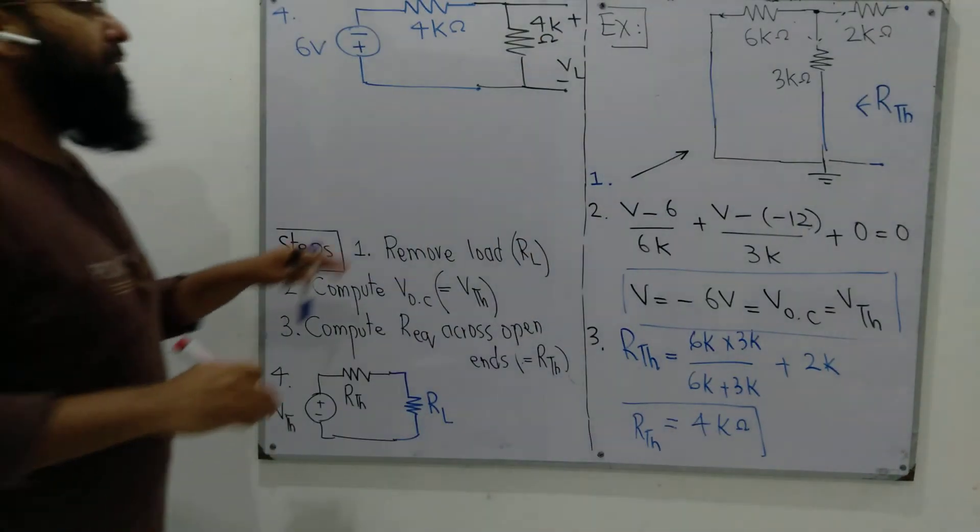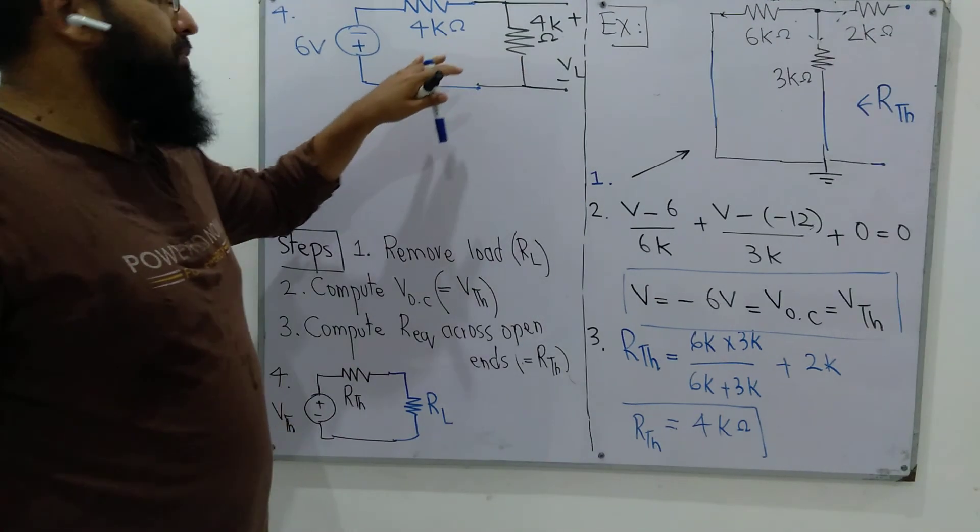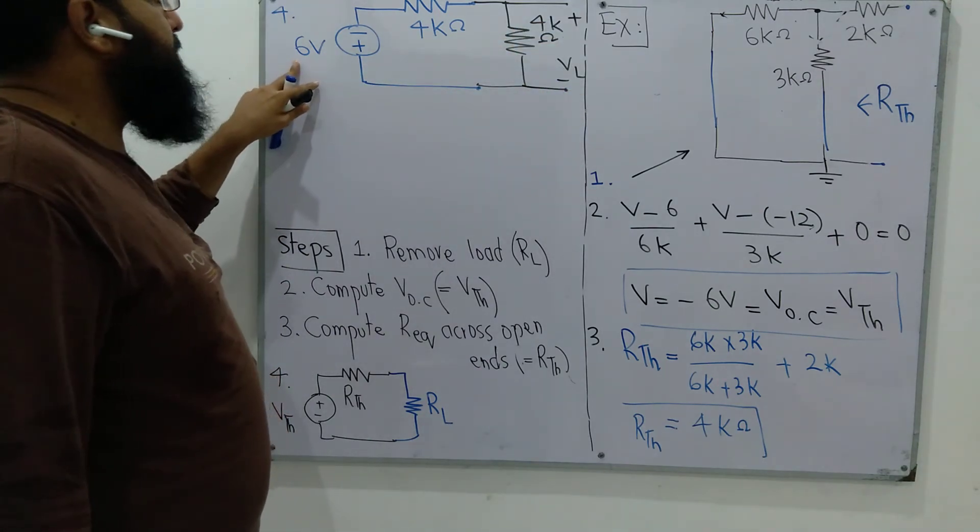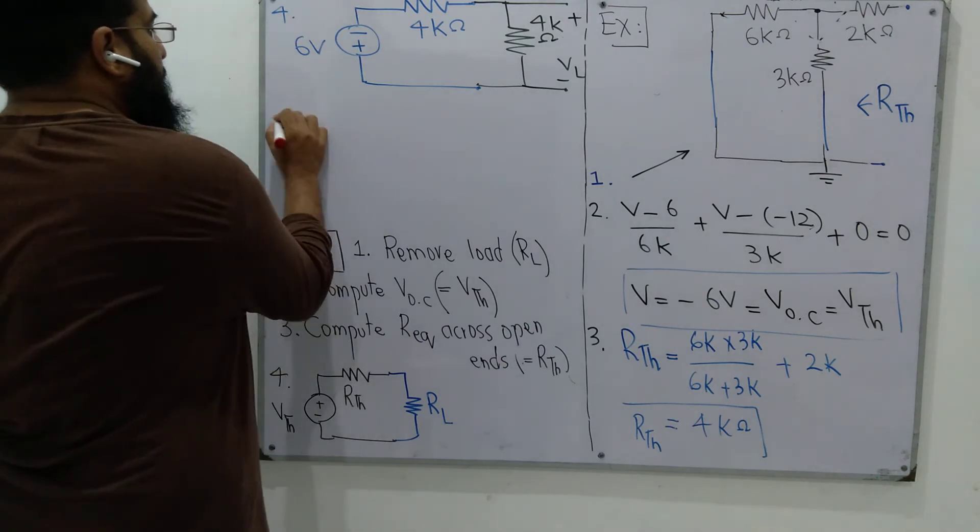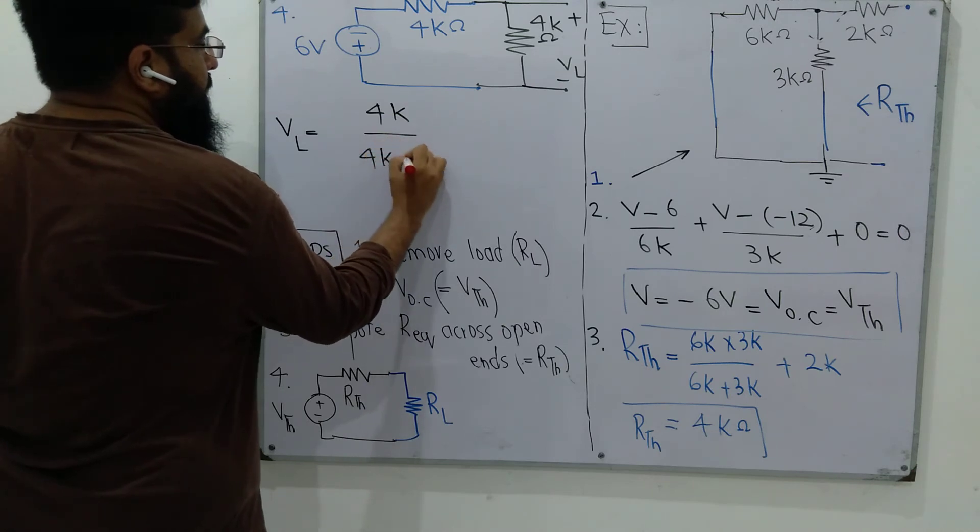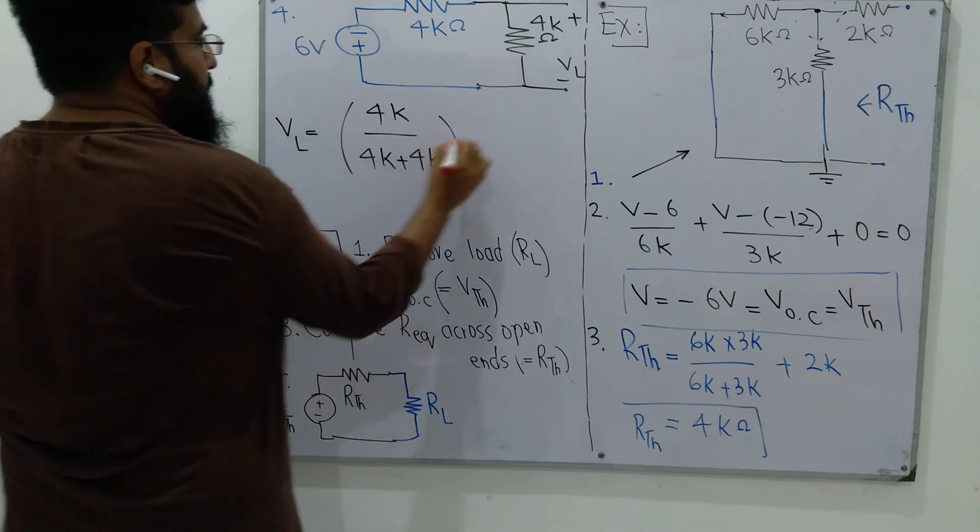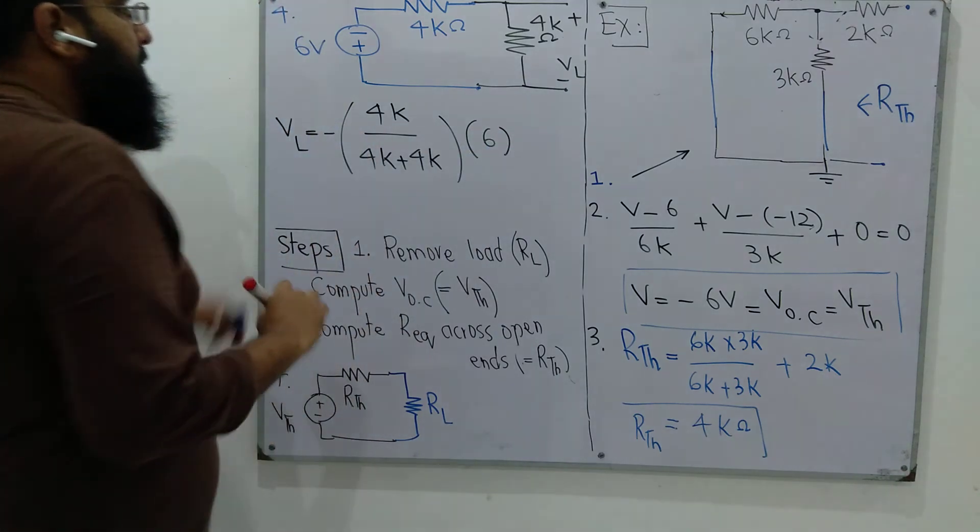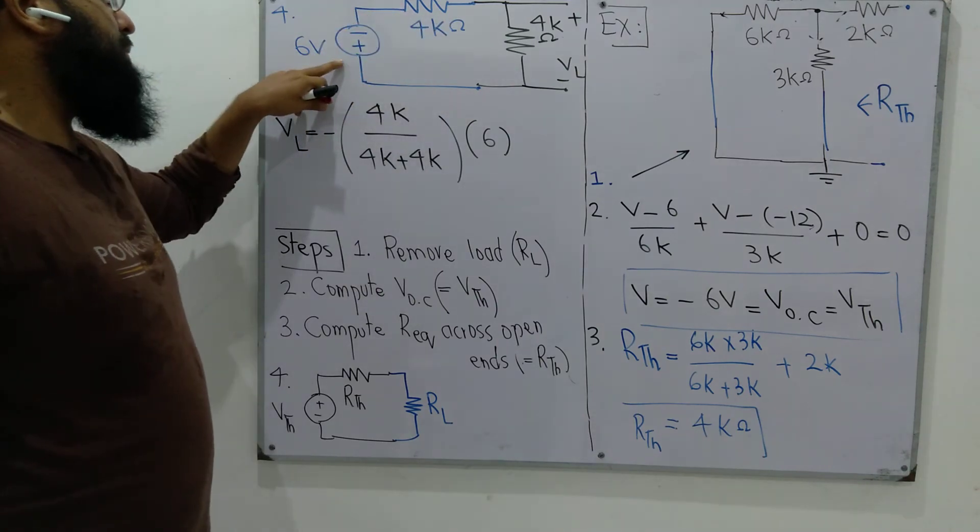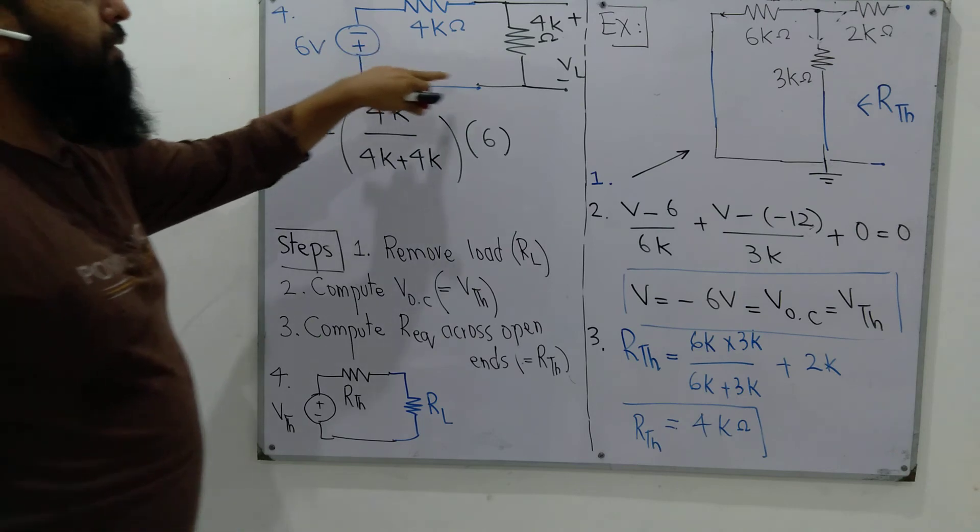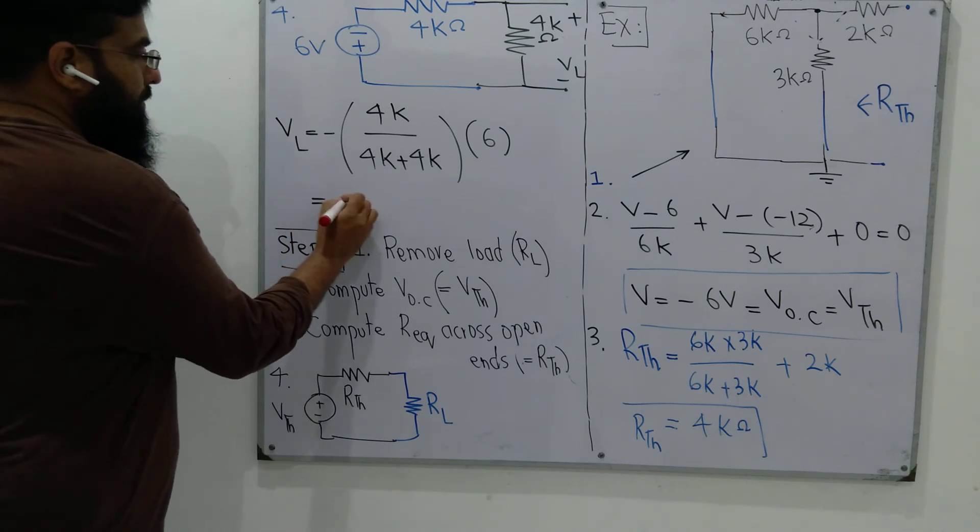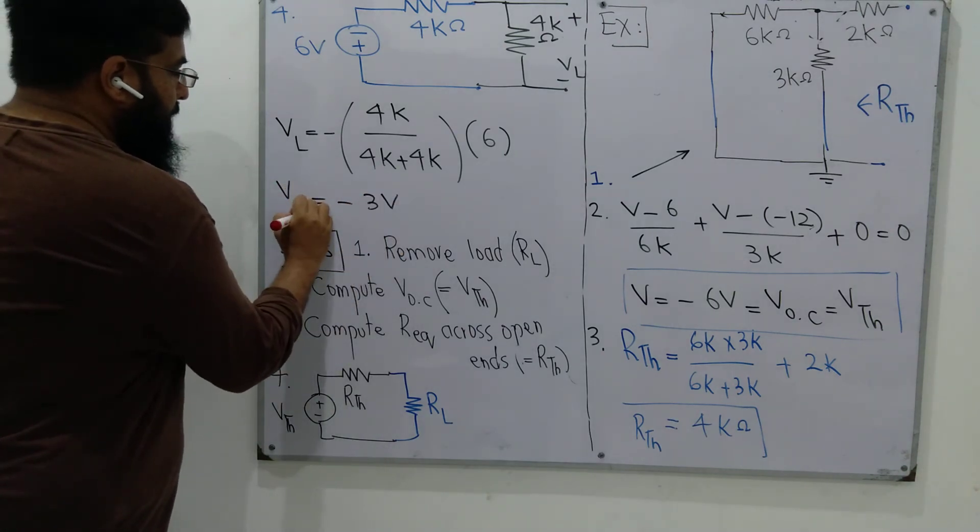Now we have a series circuit with resistors 4k ohms and a 6-volt voltage source. Since this polarity is reversed compared to the desired polarity, we will apply voltage divider: 4k divided by 4k plus 4k times 6, with a minus sign because of polarity. The current caused by this voltage source causes a polarity that is opposite to the polarity desired, therefore we put a negative sign. It comes out to be minus 3 volts.